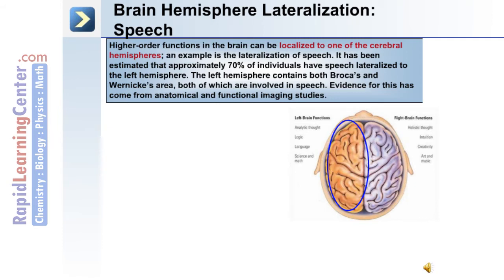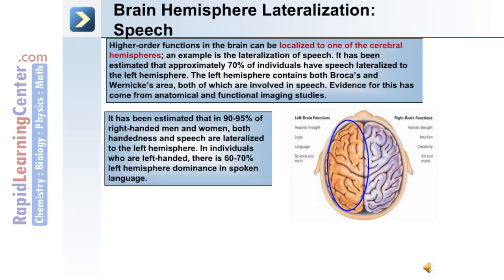It's been estimated that approximately 70% of individuals have speech lateralized to the left hemisphere. The left hemisphere contains both Broca's and Wernicke's area, both of which are involved in speech. Evidence for this has come from anatomical and functional imaging studies. It's been estimated that 90 to 95% of right-handed men and women have both handedness and speech lateralized to the left hemisphere. In individuals who are left-handed, there is a 60 to 70% left hemisphere dominance in spoken language.